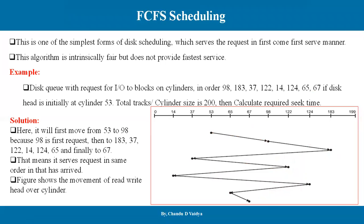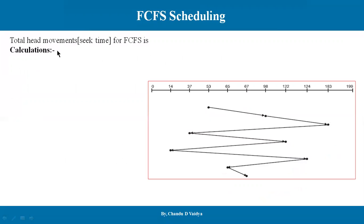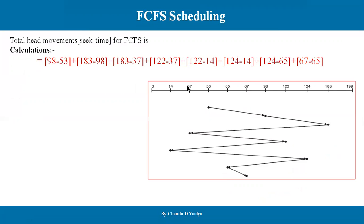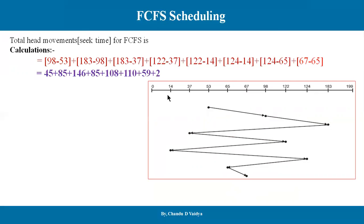Now let's calculate the total head movement and seek time for First-Come-First-Serve. Starting at 53, the head goes to 98: |98 - 53| = 45. Then to 183: |183 - 98| = 85. Then to 37: |183 - 37| = 146. These values are computed in absolute mode. The intermediate differences are 45, 85, 146, and so on. The final total head movement for First-Come-First-Serve is 640 cylinder positions.